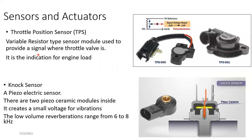Before we go into multi-cylinder systems, let us discuss the sensors and actuators used. We will start with the throttle positioning sensor. As shown here, the throttle positioning sensor is actually a variable resistor. When I discuss sensors and actuators, I am going to discuss the mostly used type — there are other types of throttle positioning sensors as well, but I am talking about the ones most commonly available.